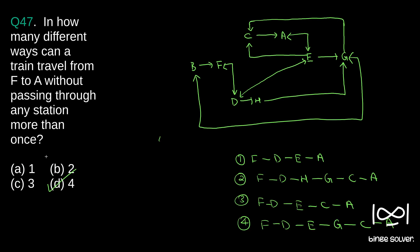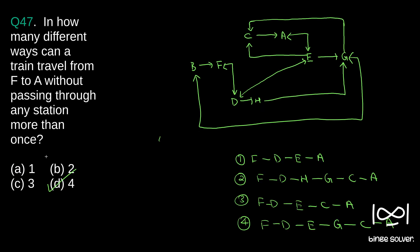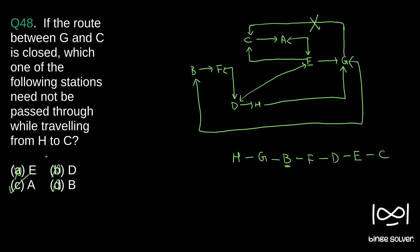To recap: question 46, the official answer key is option B, E — though option C, D also appears correct by our logic. Question 47, how many different ways from F to A — the answer is option D, 4. Question 48, we don't have to go to station A when traveling from H to C with G to C closed — answer is option C, A.